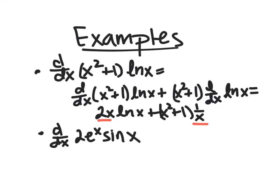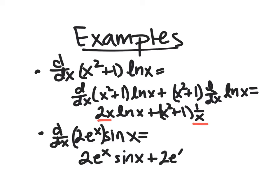Now let's look at 2eˣ·sin(x). We can split this into two pieces — 2eˣ lumped together and sin(x). The derivative of the first: constants are pulled out, so that's 2, and eˣ is its own derivative, giving back the original 2eˣ. Plus 2eˣ stays the same, and the derivative of sin(x) is cos(x). You could factor out 2eˣ, but this form is fine as well.